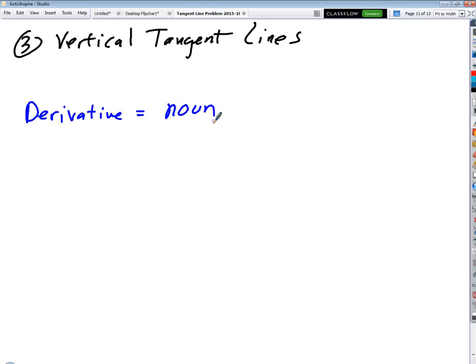A derivative is a noun. That's a thing, right? Differentiate is a verb. So the verb differentiate goes with the noun derivative, right?